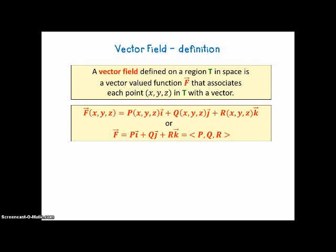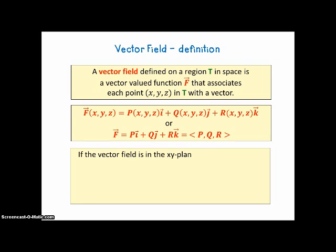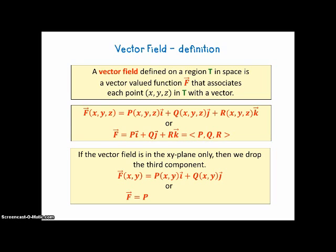Now, if you're only in two dimensions — if the vector field is in the xy-plane only — we drop the third component. So we have F(x,y) = P(x,y)i + Q(x,y)j, where P and Q are real-valued functions. In shorthand, we can drop the xy, the i, and the j.